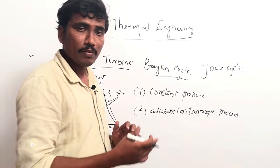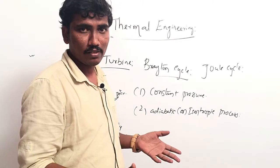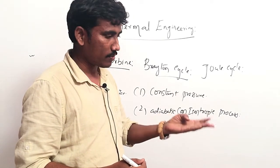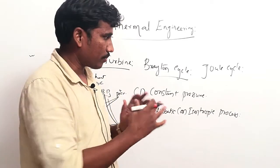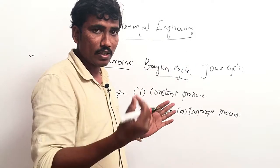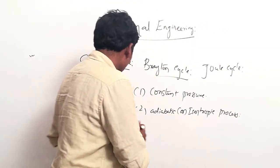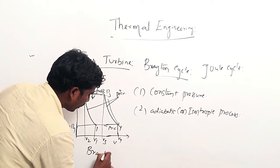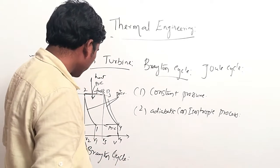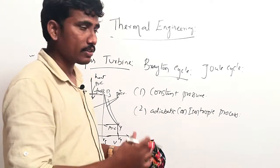Now I will explain which processes take place in the gas turbine. I will draw the main components of the gas turbine. The main components are the compressor, combustion chamber, and turbine. I will draw the process and tell you clearly what process actually goes on in the gas turbine. This is nothing but the Brayton cycle. I will draw the TS diagram for the Brayton cycle afterwards.